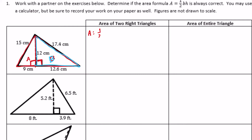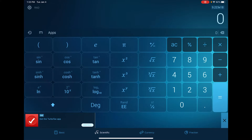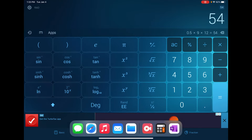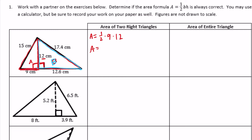Area equals one-half times base times height. The base is 9 and the height is 12. So one-half times 9 times 12 — using the calculator: 0.5 times 9 times 12 gives us 54. So the area of triangle A is 54 centimeters squared.